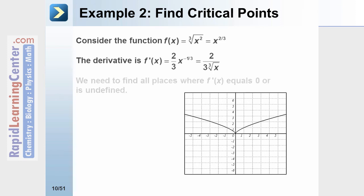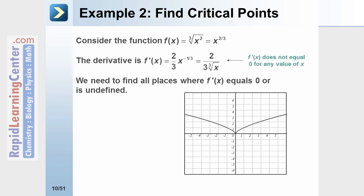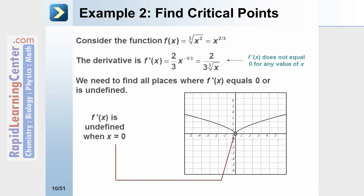That derivative is rewritten as 2 divided by 3 times the cube root of x. We now need to find all the places where the derivative equals 0 or is undefined. This derivative is never going to equal 0 because it's a fraction with no variable in the numerator. However, there is a place where this derivative is undefined — at x = 0 — and you can see the critical point shown on the graph.